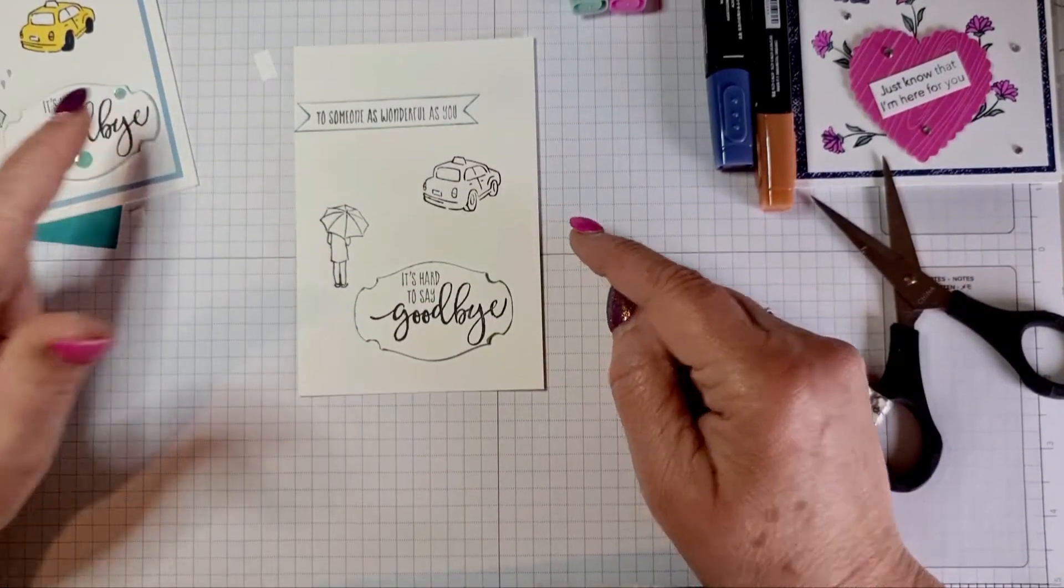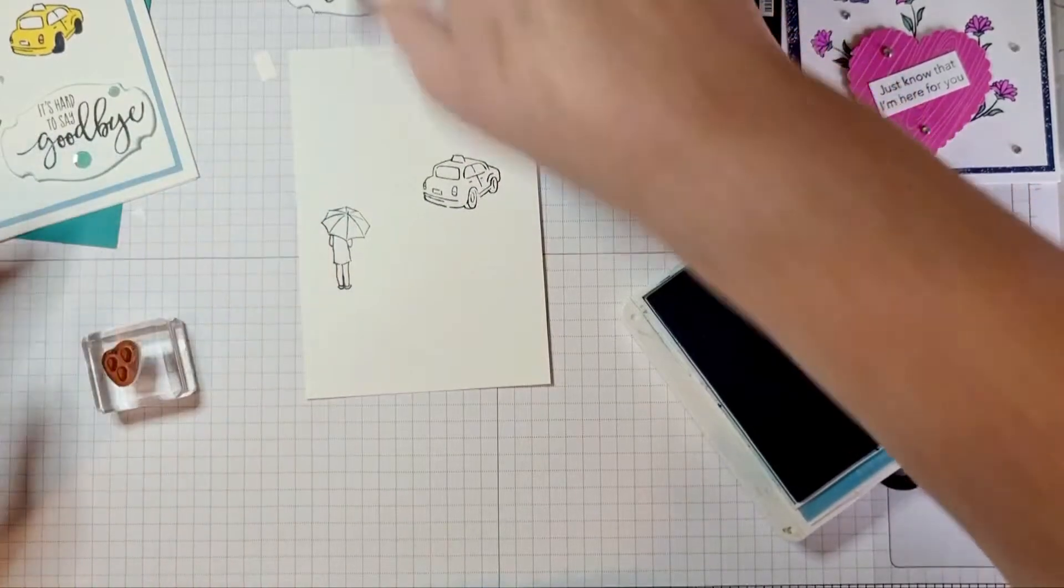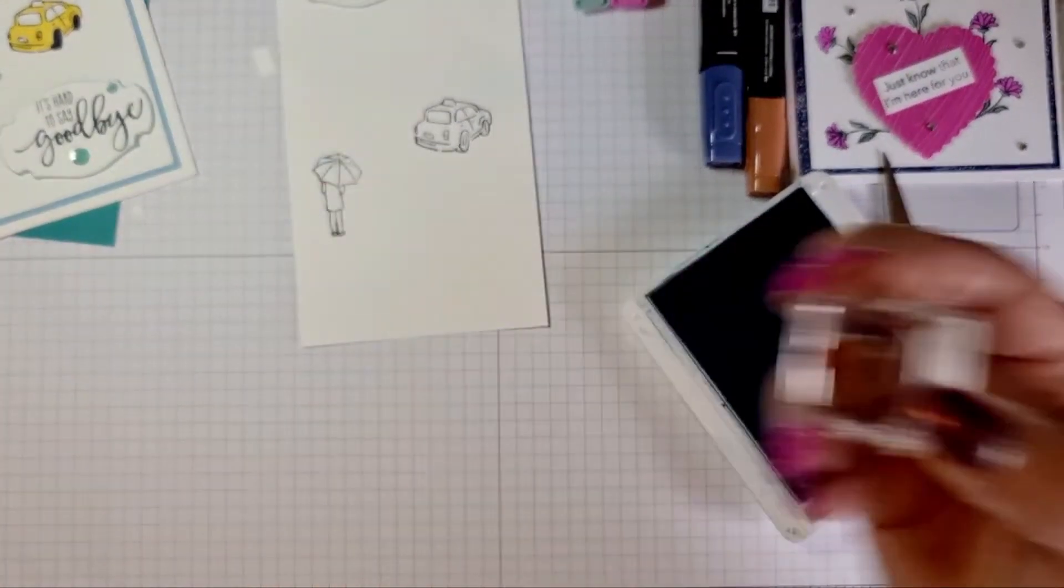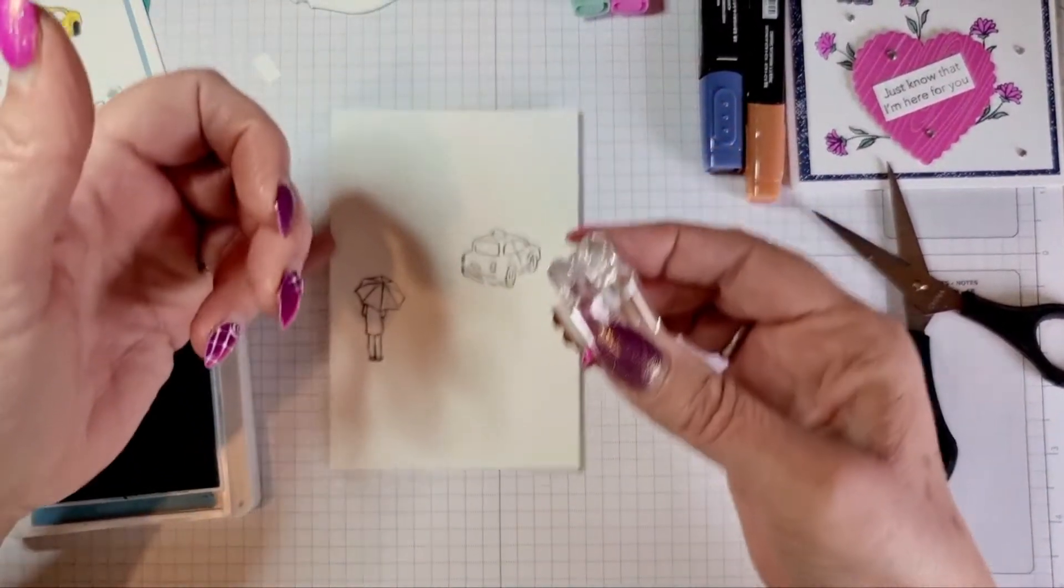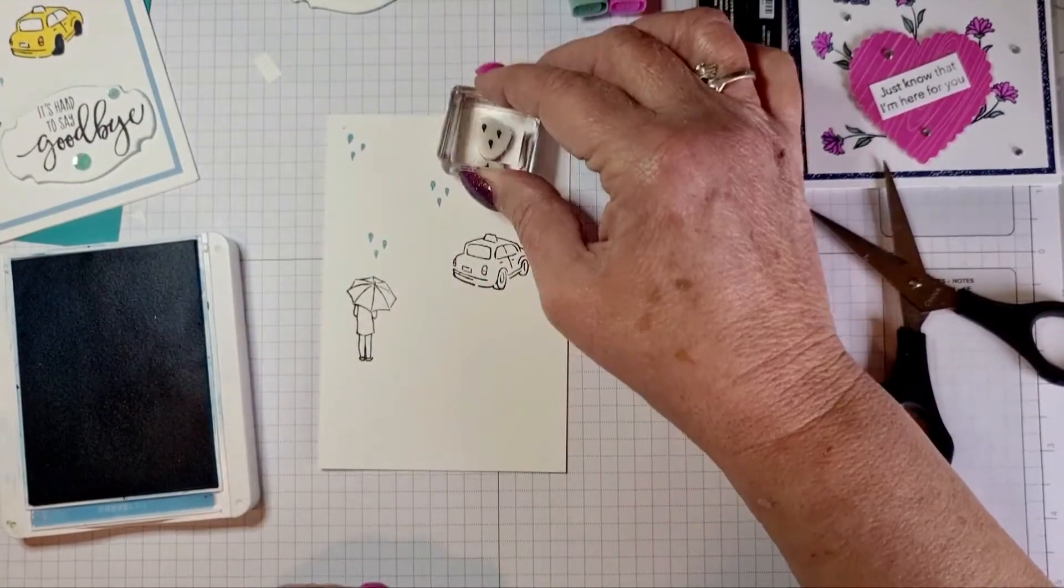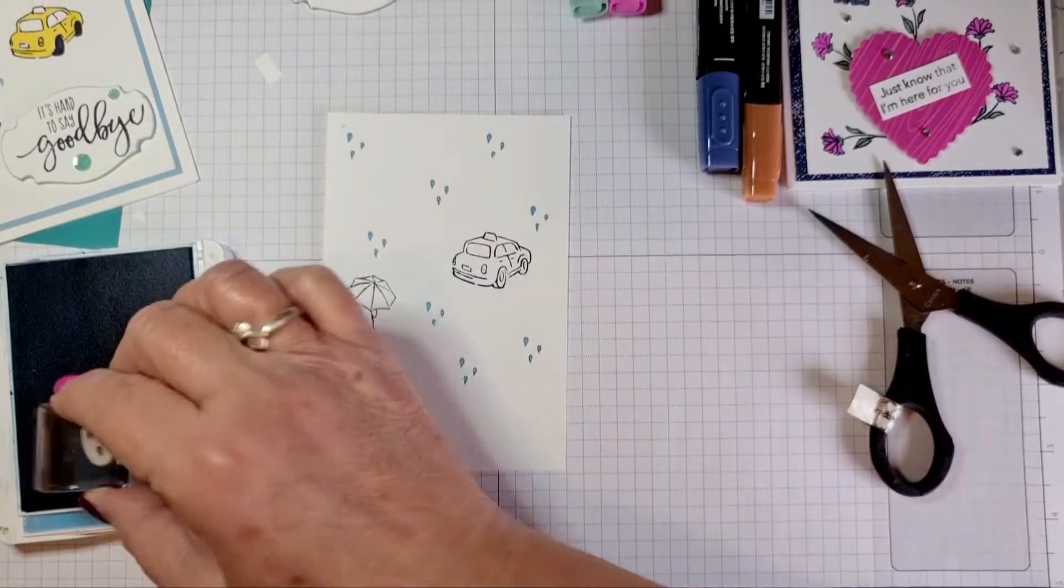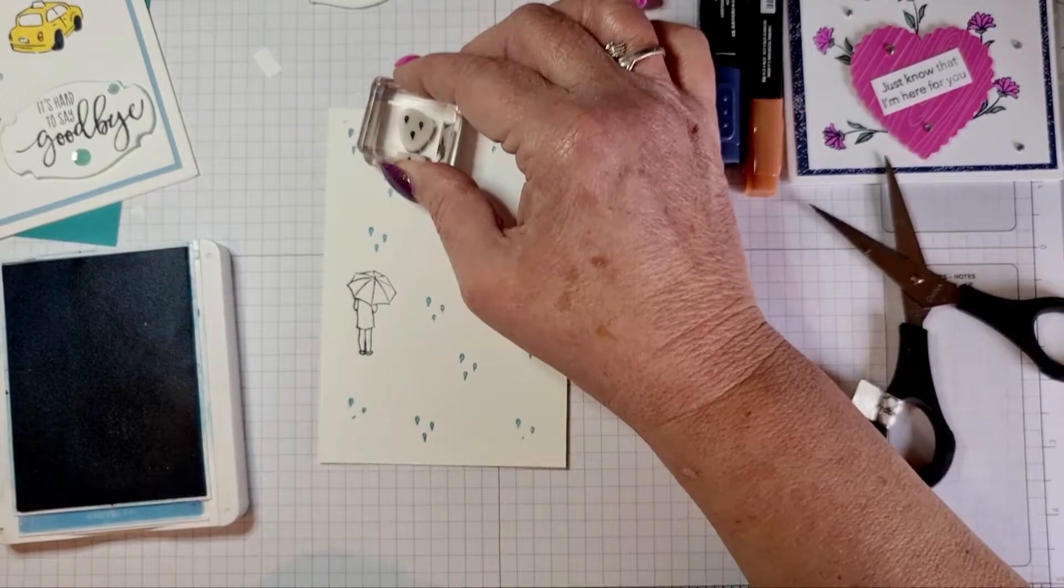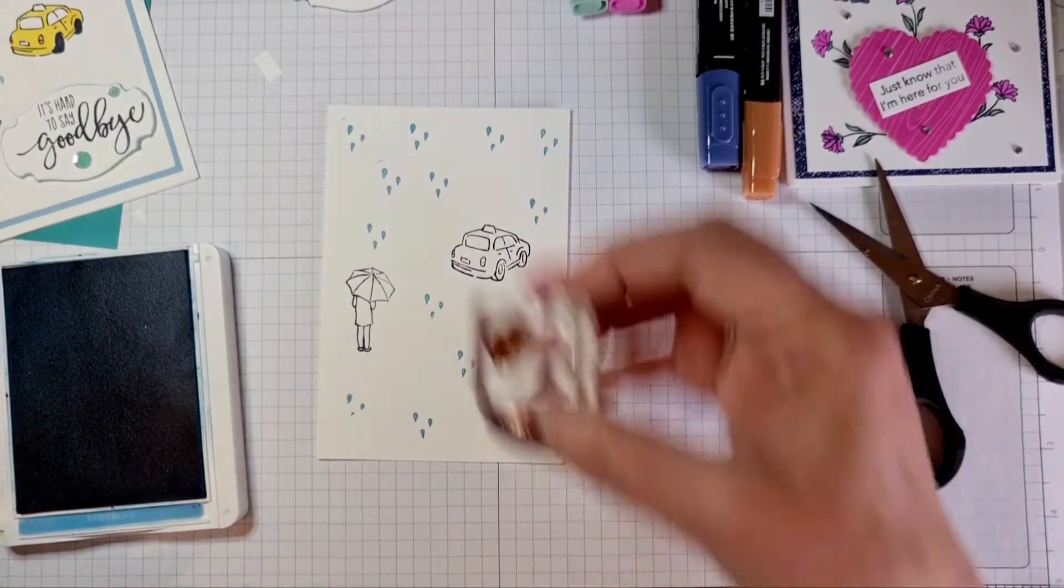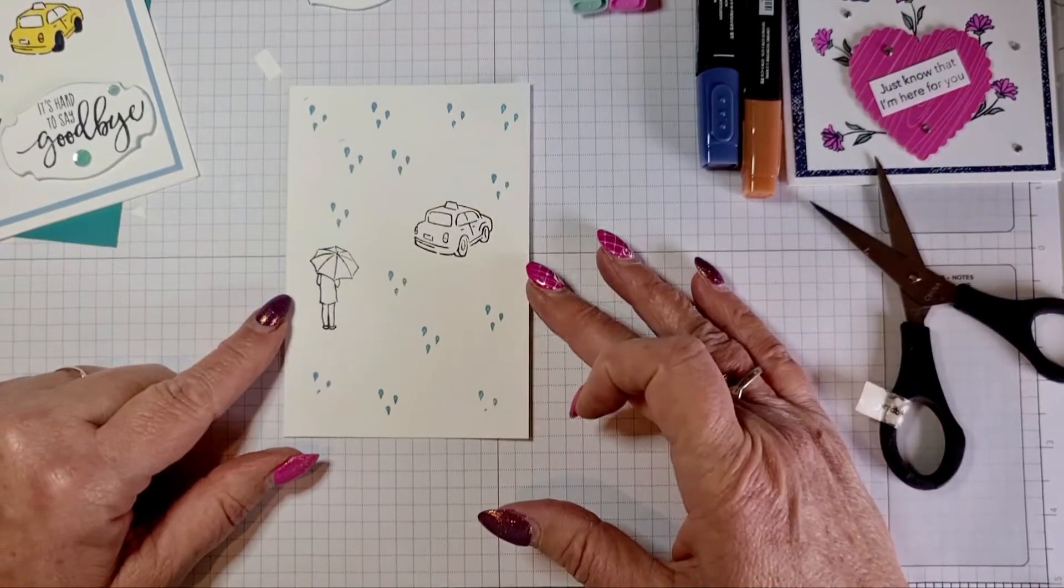Now I want my raindrops, so I'm doing those in Balmy Blue. I'm just going to stamp some little raindrops because the sad people are leaving. It just gives a little bit of a background as well. I don't want to press on too hard because you can see I've got little lines on it. I shall cover them up with some gems. Gems are the answer to a lot with me.